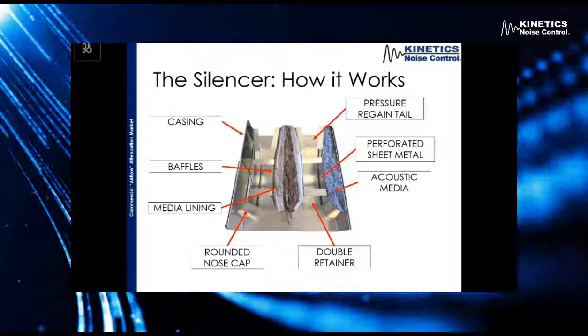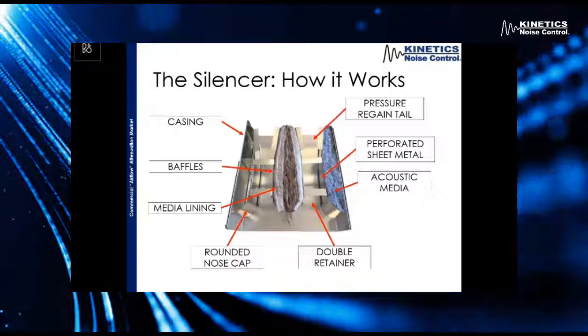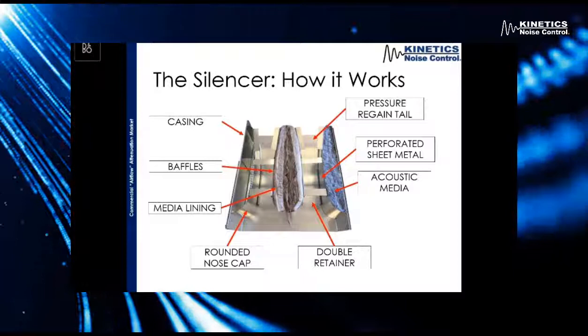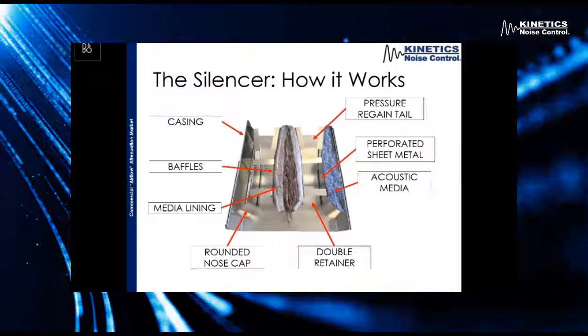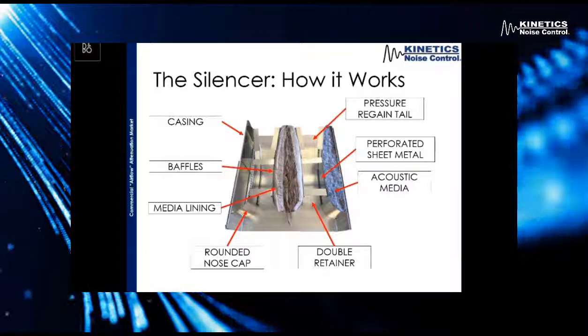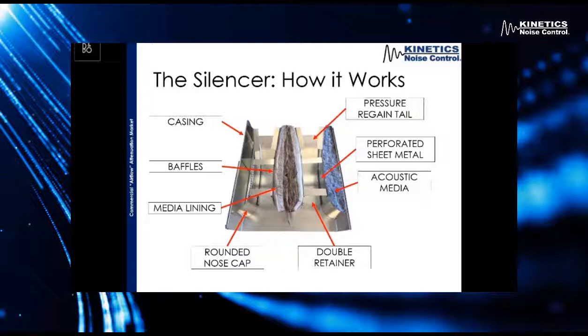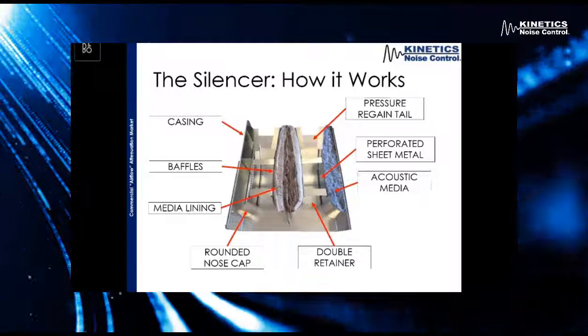This is the inside of a silencer — it looks a little funny because this is a sample, but we'll go through the main features. The first one is the outside casing, which is what holds the silencer together. We select the casing based on what the ductwork is — generally it's going to be the same gauge thickness as well as the same material. Our standard would be a 22-gauge galvanized steel casing, but we can also do 304 or 316 stainless steel, aluminum, or go to thicker gauges like 16, 12, 10, etc.